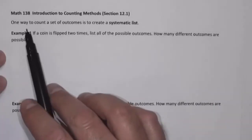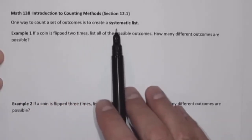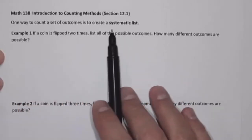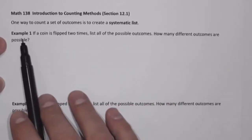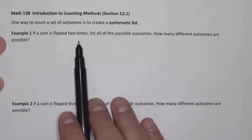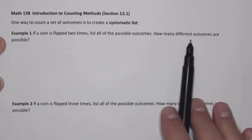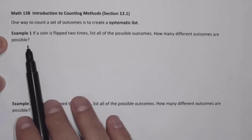One way to count a set of outcomes is to create a systematic list. When we're counting, we literally want to list out all of the possible outcomes that could occur. For example, if a coin is flipped two times, list all the possible outcomes — how many different outcomes are possible?